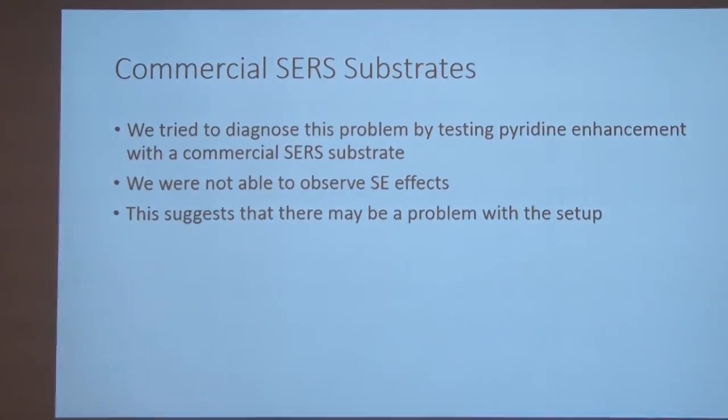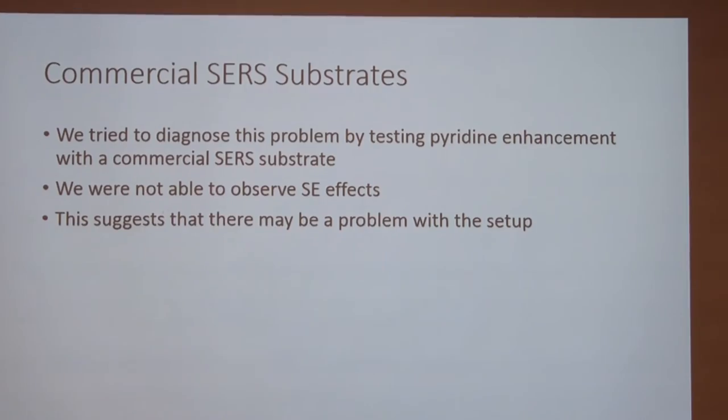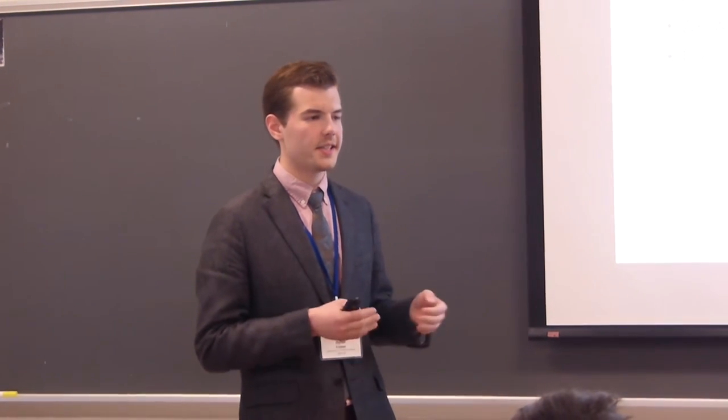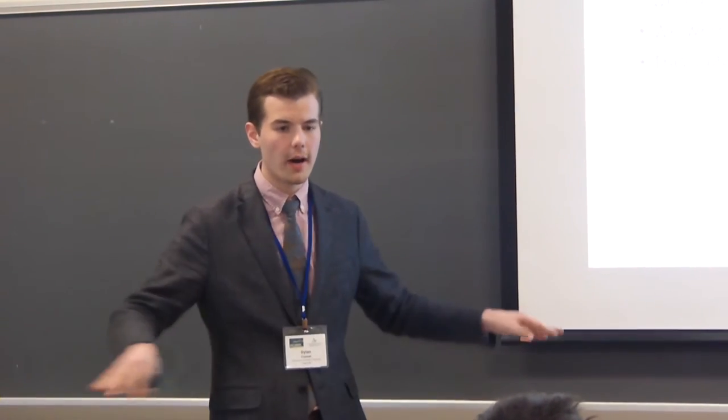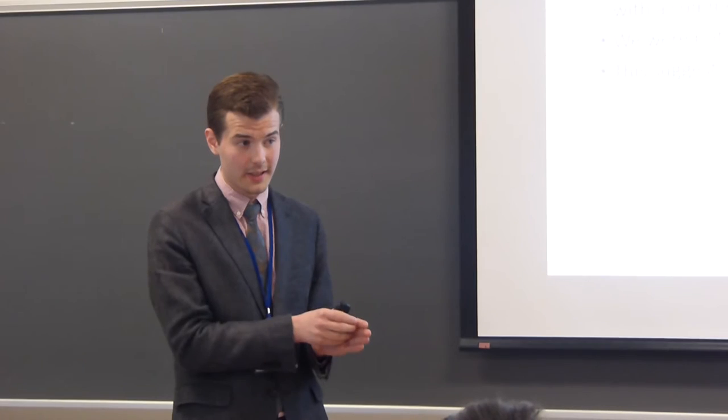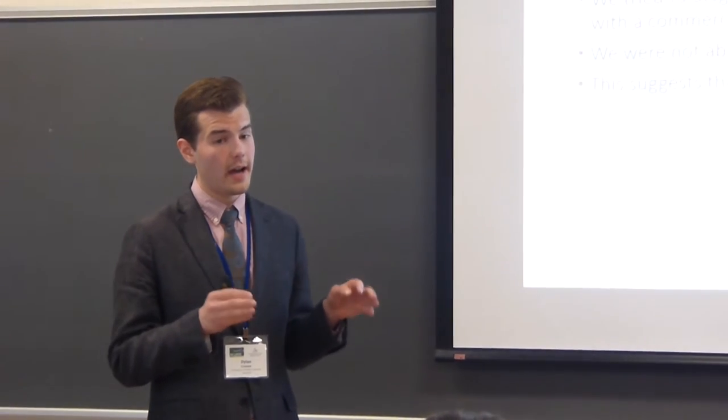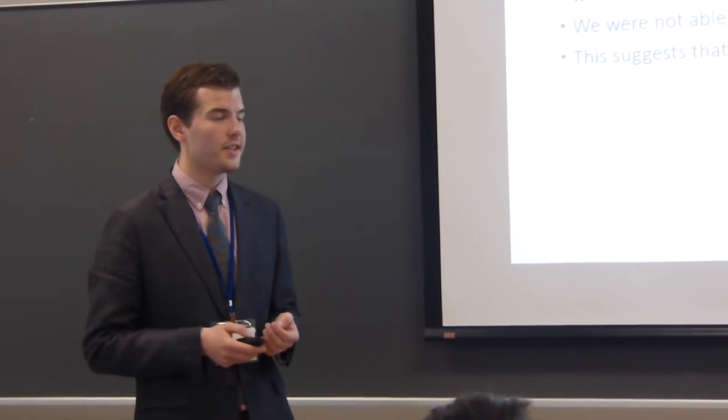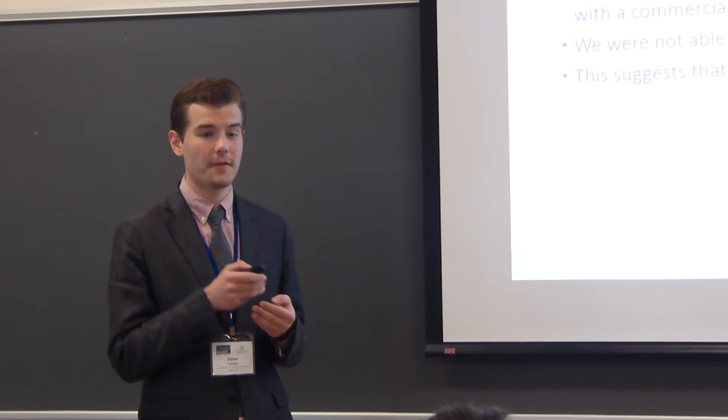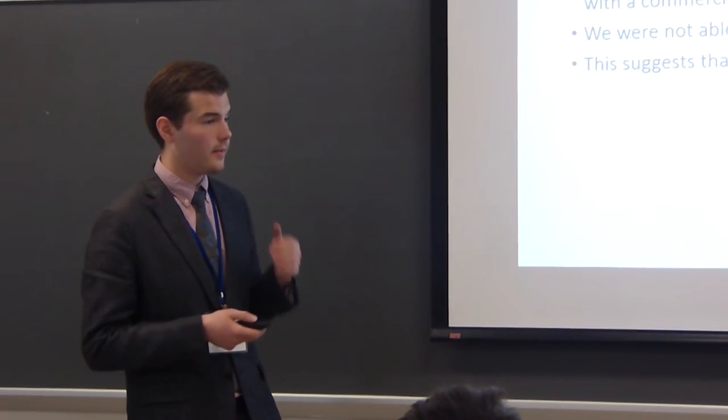So, we got one set of data which suggested enhancement was happening and another that suggested we weren't getting enhancement. What gives? Well, we're a little suspicious about some experimental design considerations. So, we decided to get just commercial SERS substrates, not wires. These are just pieces of silver that other people have made for Raman spectroscopy specifically. And when we tested those, there was absolutely no surface enhancement there either. We couldn't tell the difference between the signals there. So, that means that there's probably something about our setup which is preventing surface enhancement from happening.